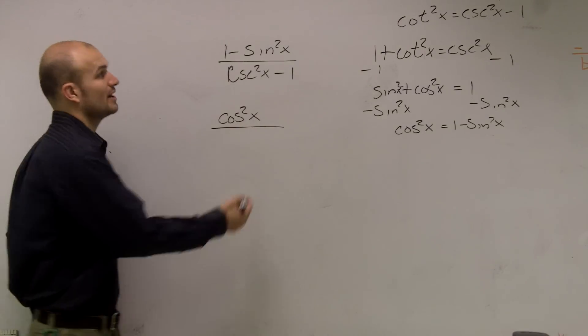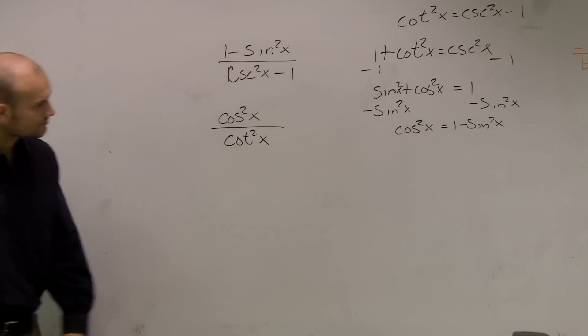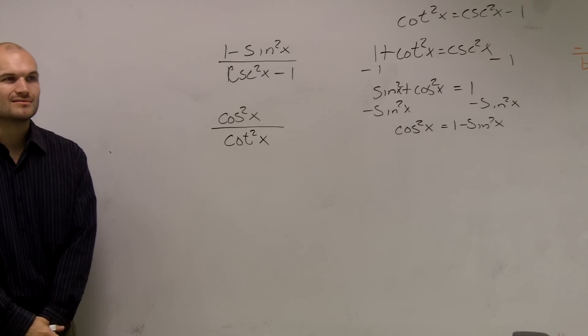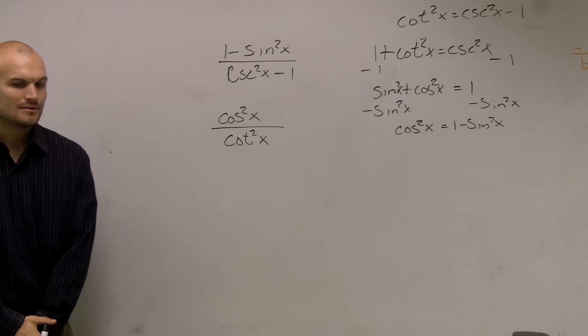So now on the bottom I can write cotangent. Now what do I do, right? We got this far, now what happens?